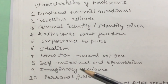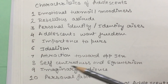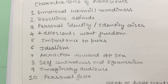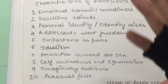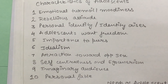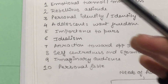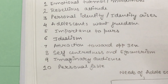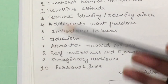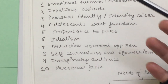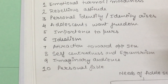Ninth is imaginary audience — adolescents feel they are on stage and that everyone is watching and focusing on them. If they wear a shirt, they feel everyone is looking at them. They have a lot of self-consciousness. Tenth is personal fables — they feel they are very special and unique, and that they will never be wrong. For example, they may do risky things like crossing red lights, thinking nothing bad will happen to them.